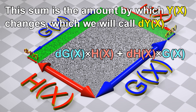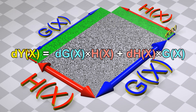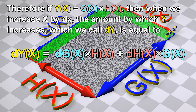This sum is the amount by which y changes, which we will call dy. Therefore, if y equals g multiplied by h, then when we increase x by dx, the amount by which y increases, which we call dy, is equal to dg multiplied by h, plus dh multiplied by g.